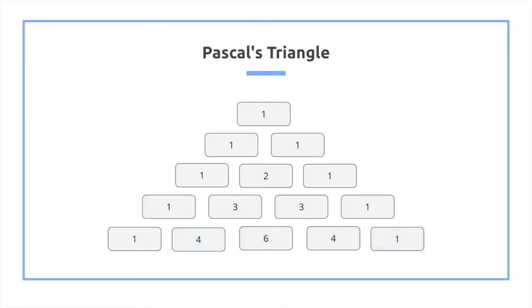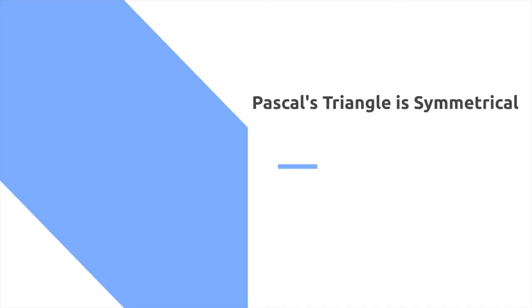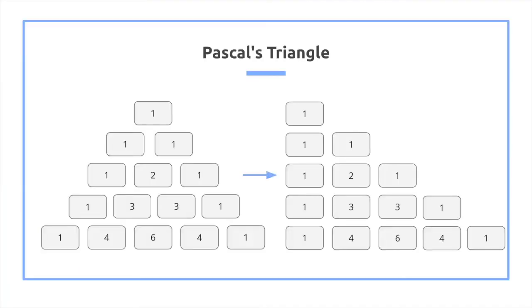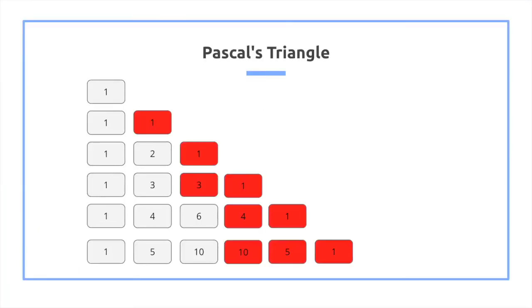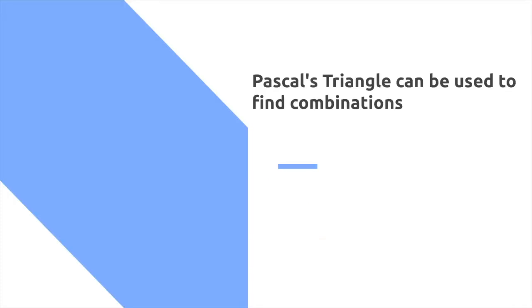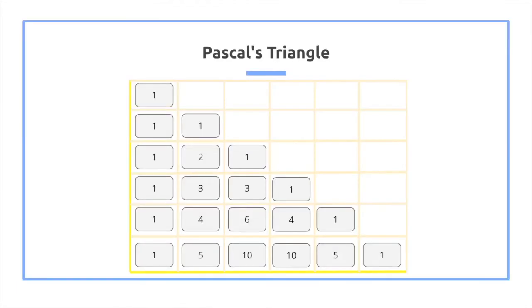So what is the significance of Pascal's triangle? Well, the first thing is we notice that it's symmetrical, which means we can take it, shift it like this, and we notice that we don't need most of those cells. But the more important observation is that we can use it to find combinations.